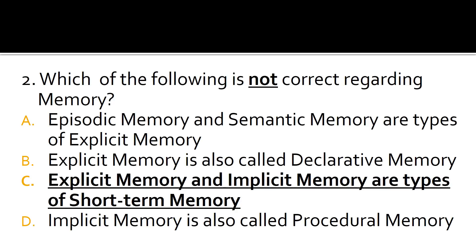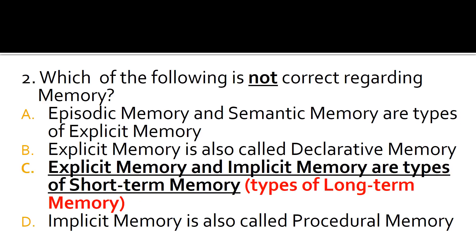C is the statement which is not correct regarding memory; the other three statements are correct. Explicit and implicit memory are types of long-term memory, not short-term memory.